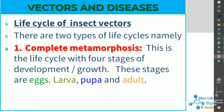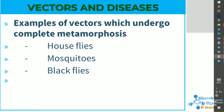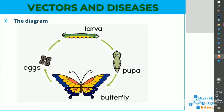The life cycle of insect vectors has two types. The first is complete metamorphosis, which is the life cycle with four stages of development: egg, larva, pupa, and adult. Examples of vectors which undergo complete metamorphosis include houseflies, mosquitoes, and black flies. This is a diagram showing complete metamorphosis.